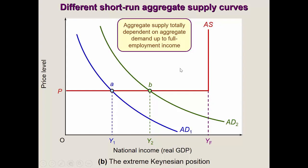The classical view, by contrast, is that at any point as we shift aggregate demand or stimulate the economy, we see price rises and output rises at the same time. So this is a summary of these two views — they are not necessarily opposing, but simply two different perspectives. See you in the next video.